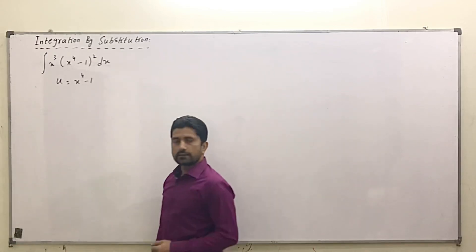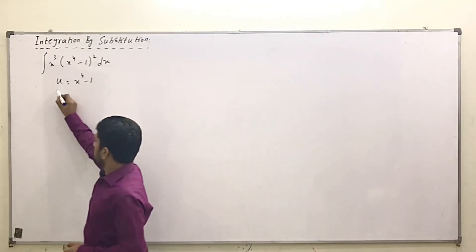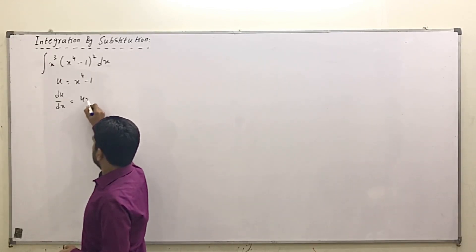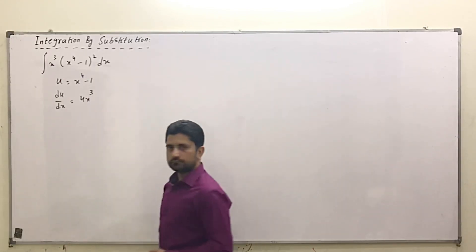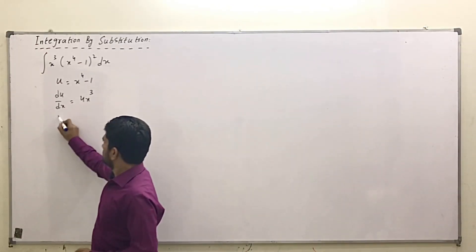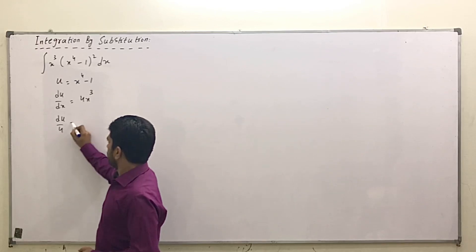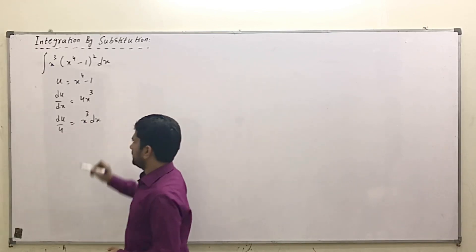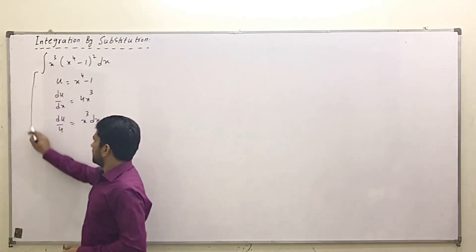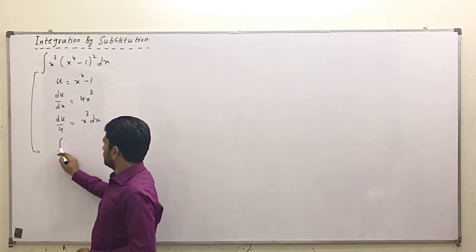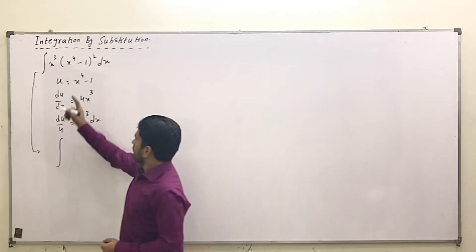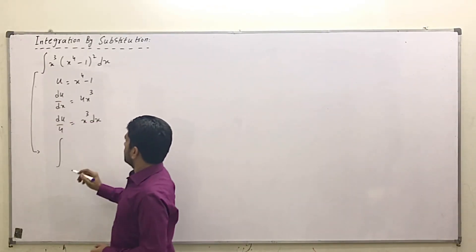With u = x⁴ - 1, if I take the derivative I get du/dx = 4x³. Now separating x³ and dx, we have du/4 = x³ dx. Now we are going to rewrite this integral in terms of the new variable u.